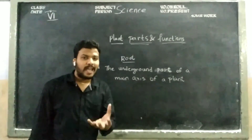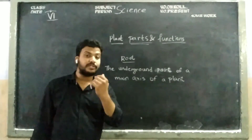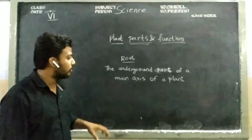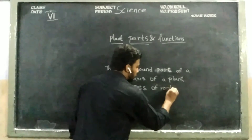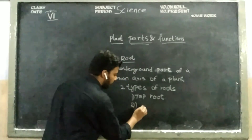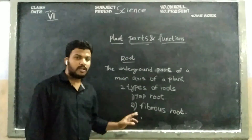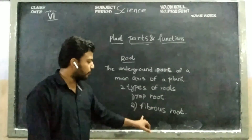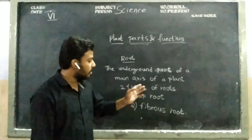Roots act as a basement. We are able to see leaves, branches, and flowers, but we are not able to see the roots which are present underground in the soil. There are two types of roots: the first type is tap root, and the second type is fibrous root. Any kind of plant should contain only these two types of roots. We will continue in the next class with a clear explanation of what is tap root and what is fibrous root. Thank you children.